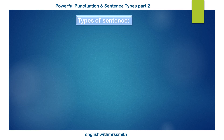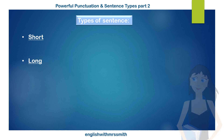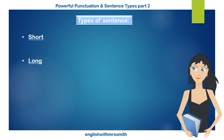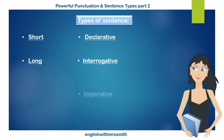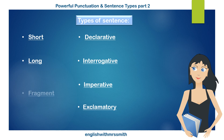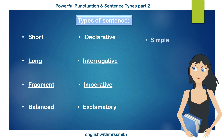A quick recap. In part one, we reviewed the assessment criteria for writing and then looked at the impact of using sentences of different length. In part two, we've identified declarative sentences, interrogative, the imperative and exclamatory. We've also visited fragments and balanced sentences. In part three, let's take a look at the simple, the complex and the compound sentence.